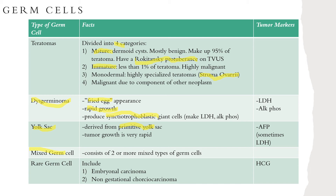Embryonic carcinomas make up 4 percent of malignant germ cells. They resemble the embryonic carcinoma of the testes, which is much more common, and are the most aggressive ovarian malignant neoplasm. These will make HCG as their tumor marker. Non-gestational choriocarcinoma is exceedingly rare — incidence of primary ovarian non-gestational choriocarcinoma is about 1 in almost 400 million. Histologically, to differentiate non-gestational from gestational choriocarcinoma, DNA testing of the tumor is performed. Presence of paternal DNA leads to the diagnosis of gestational choriocarcinoma. These tumors also produce beta-HCG.